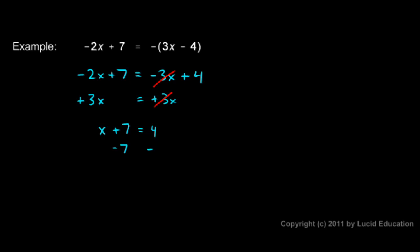Now I can subtract 7 from each side. The plus 7 and the minus 7 cancel each other out. And on the left I'm left with only x isolated. On the right I have 4 minus 7. And the answer is negative 3. x equals negative 3.